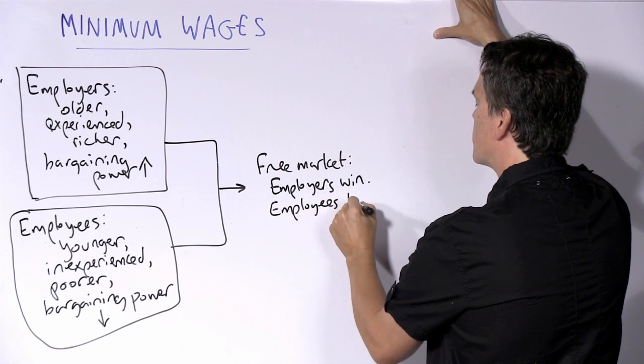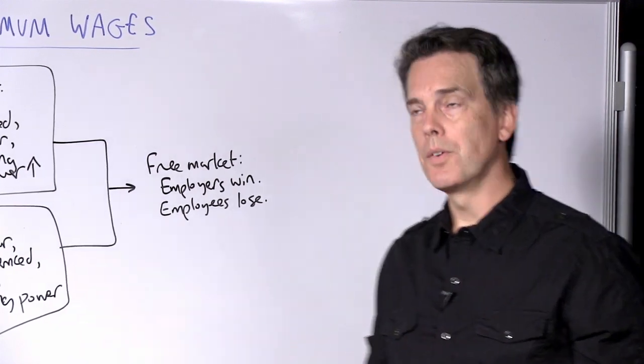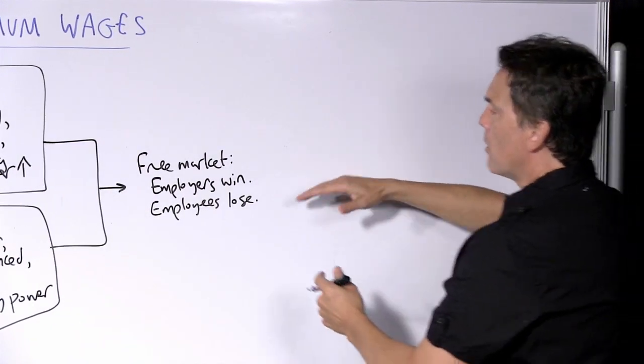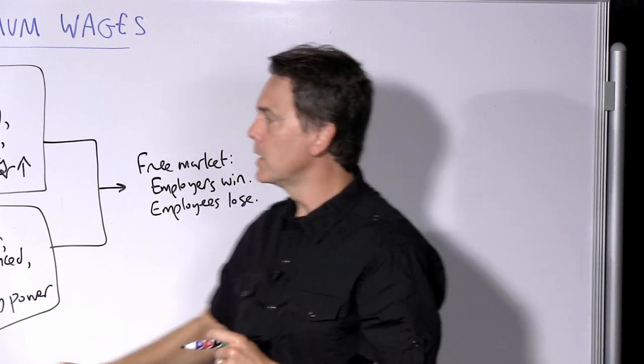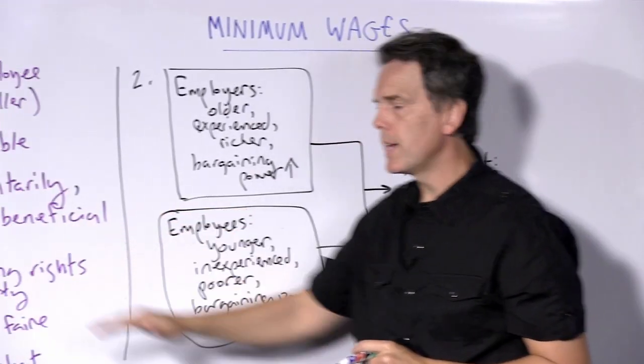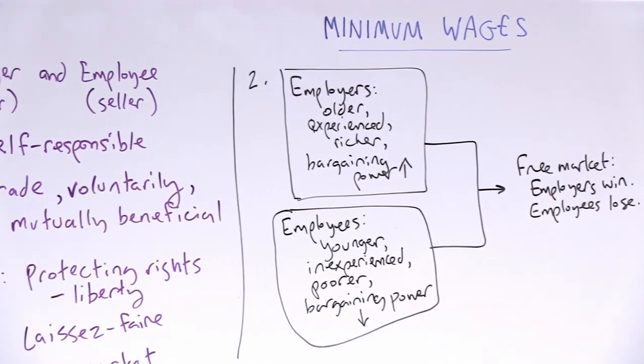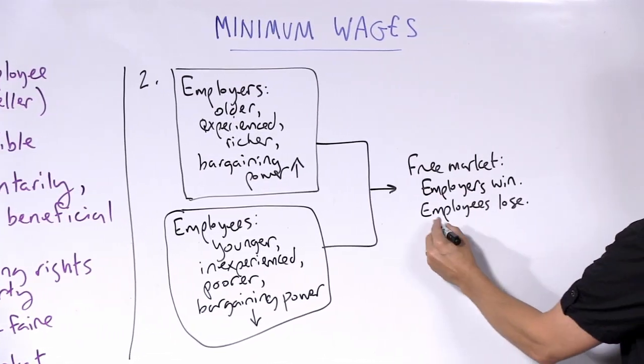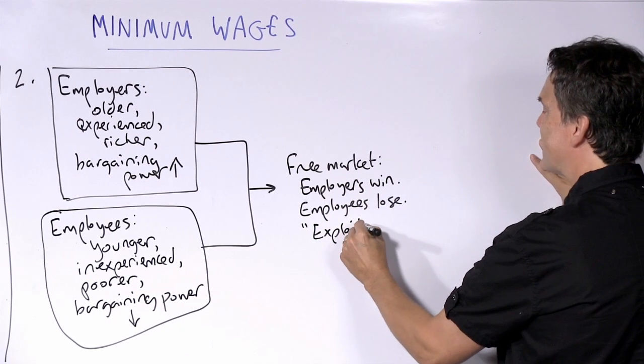They will have to accept very low wages just in order to have a job. So what we have then is an analysis that says in a free market what we are not going to get is mutually beneficial transactions, rather we are going to get win-lose transactions, or zero-sum transactions. This in the employment literature sometimes is called exploitation.